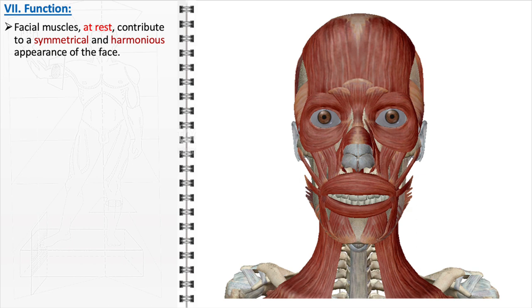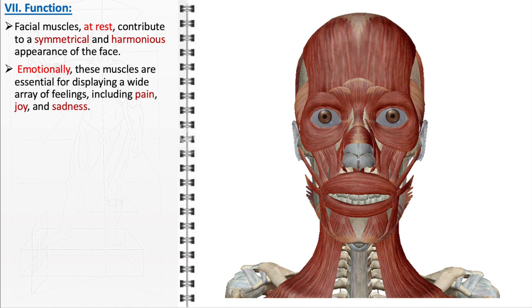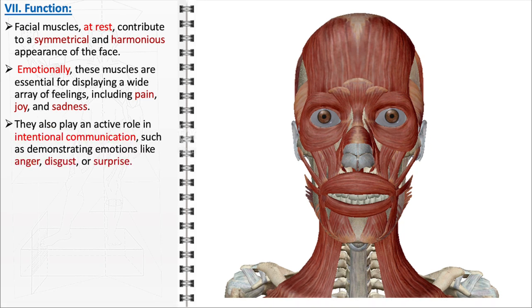Regarding their functions, facial muscles at rest contribute to the symmetrical and harmonious appearance of the face, subtly conveying a person's resting emotional state — important in social interactions where first impressions are based on facial appearance. Emotionally, these muscles display a broad spectrum of feelings, ranging from basic emotions like pain, joy, and sadness to subtler expressions such as empathy, confusion, and contemplation. In intentional communication, they reinforce or contradict spoken words — a smile can enhance a friendly greeting, while a frown might indicate disagreement, adding depth to interpersonal communication.